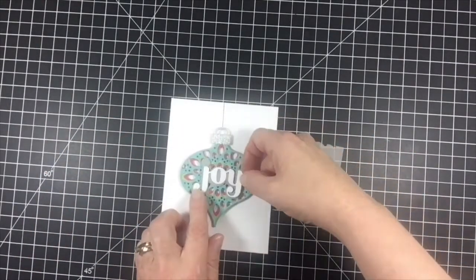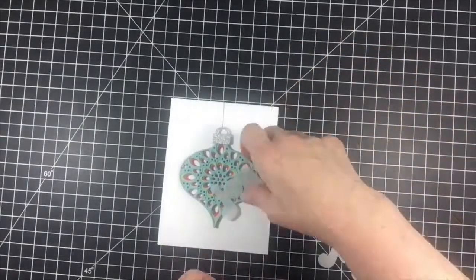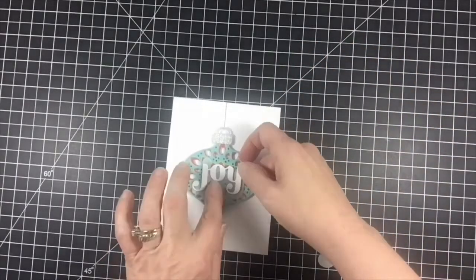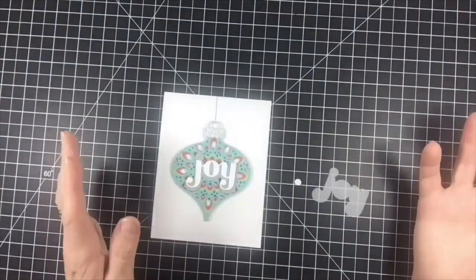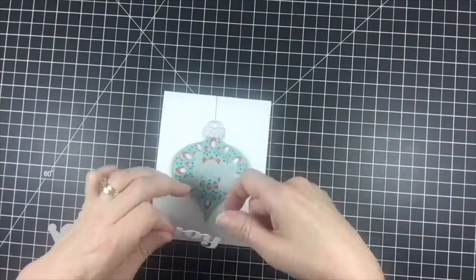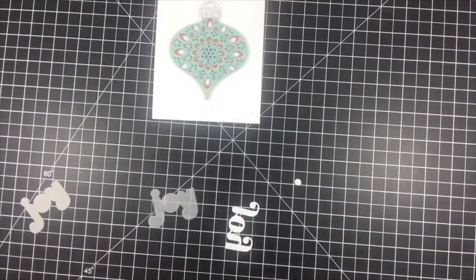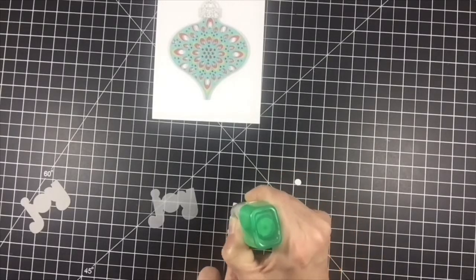When it came to my sentiment, I die cut the cloud behind the word joy ahead of time in both gray and vellum. I did that because I wasn't sure which one I was going to like the best. In the end, I went with the vellum because it made the card a bit brighter than using just the gray.